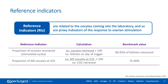Let's look at reference indicators first. They relate to oocytes coming into the lab as proxy indicators of response to ovarian stimulation. The Vienna consensus suggests two reference indicators: the proportion of oocytes recovered at retrieval, which should be 80–95% of follicles measured as benchmark, and the proportion of mature M2 oocytes at the time of ICSI, suggested to be 75–90% as benchmark.